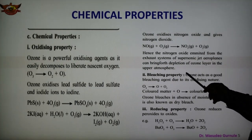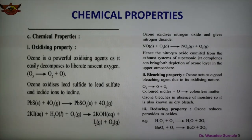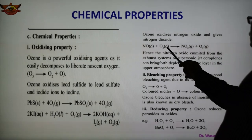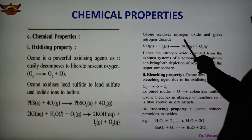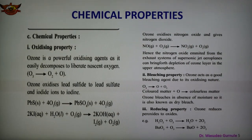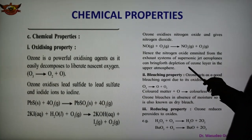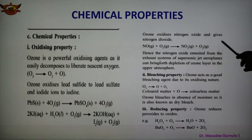Ozone also oxidizes nitrogen oxide, forming nitrogen dioxide. Nitric oxide reacts with ozone forming nitrogen dioxide. Therefore, nitrogen oxide from the exhaust of supersonic jet aeroplanes can bring about depletion of ozone, because NO2 causes depletion of the ozone layer in the upper atmosphere.